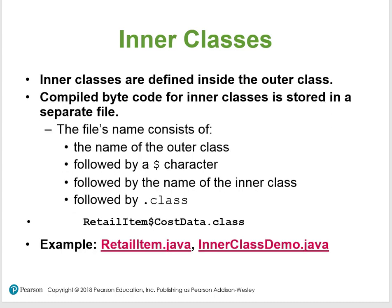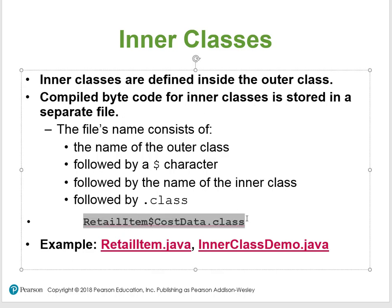Inner classes are defined inside the outer class. The compiled bytecode for inner classes is stored in a separate file. The file name consists of the outer class name, followed by a dollar sign, followed by the inner class name, followed by .class. Look through the Retail and InnerClassDemo examples.